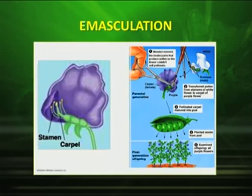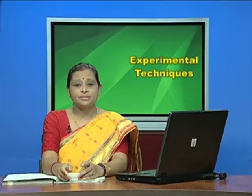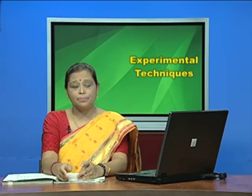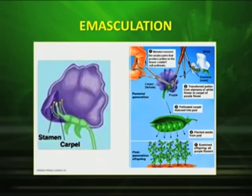As you can see in the picture, the process is called emasculation. In this technique, the anthers are removed from one plant, and the pollen grains from another plant are dusted on the stigma of the female plant. That is how cross-pollination is done. This was the technique used by Mendel.